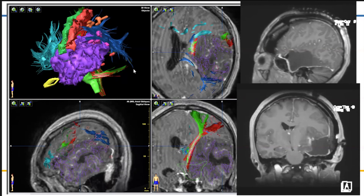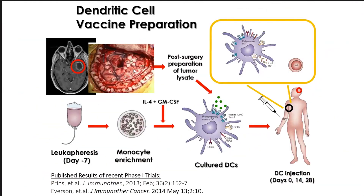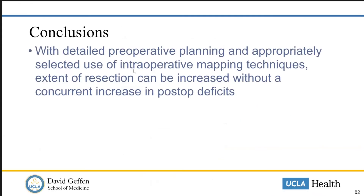Putting all this together is really how we optimize the safe resection of patients with primary malignant tumors. In conclusion, with detailed planning and appropriate use of these techniques, we can maximize the extent of resection without incurring additional costs in terms of postoperative deficits.